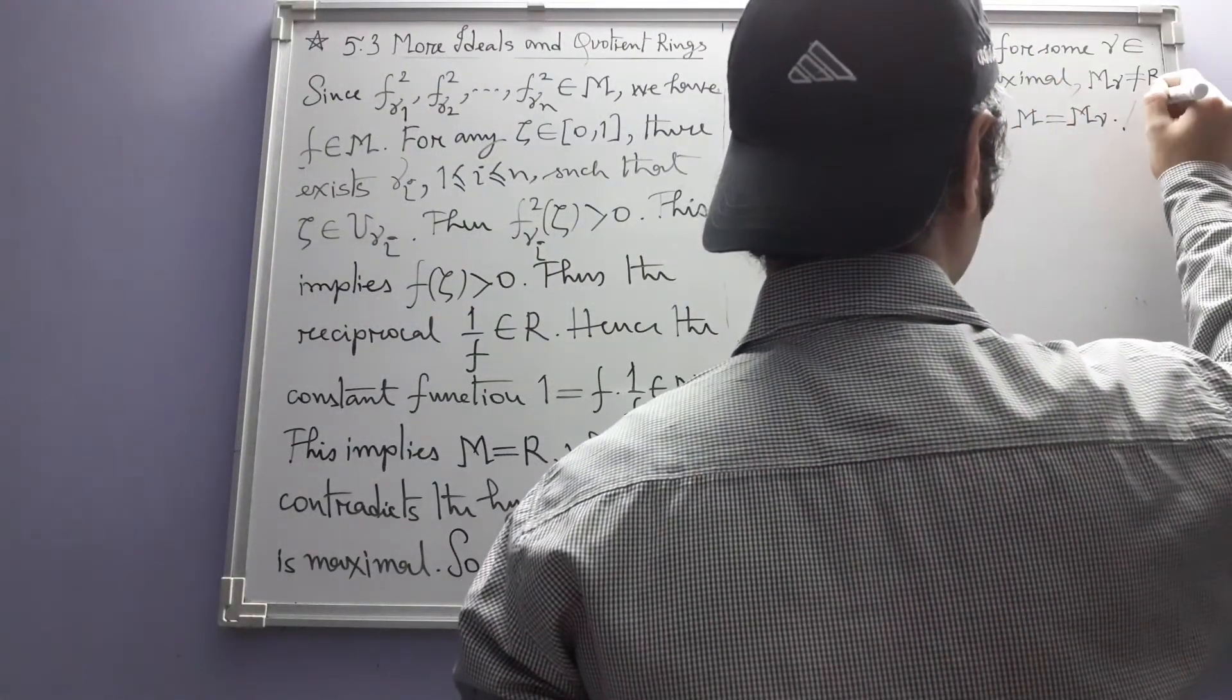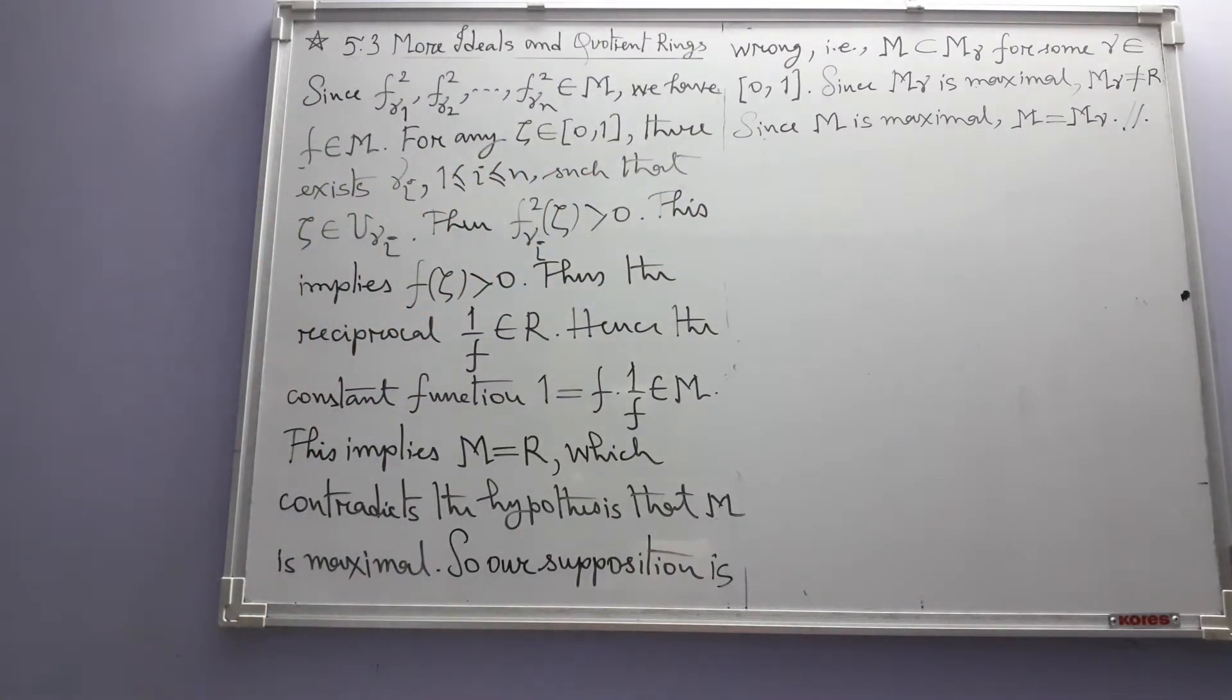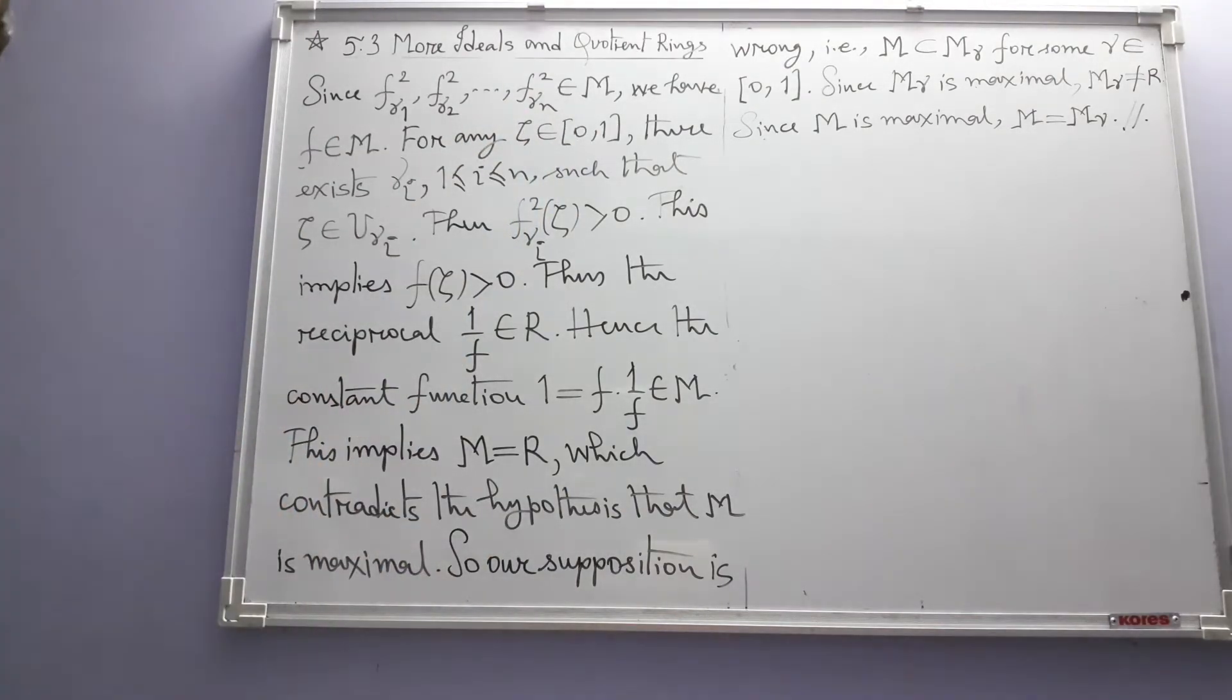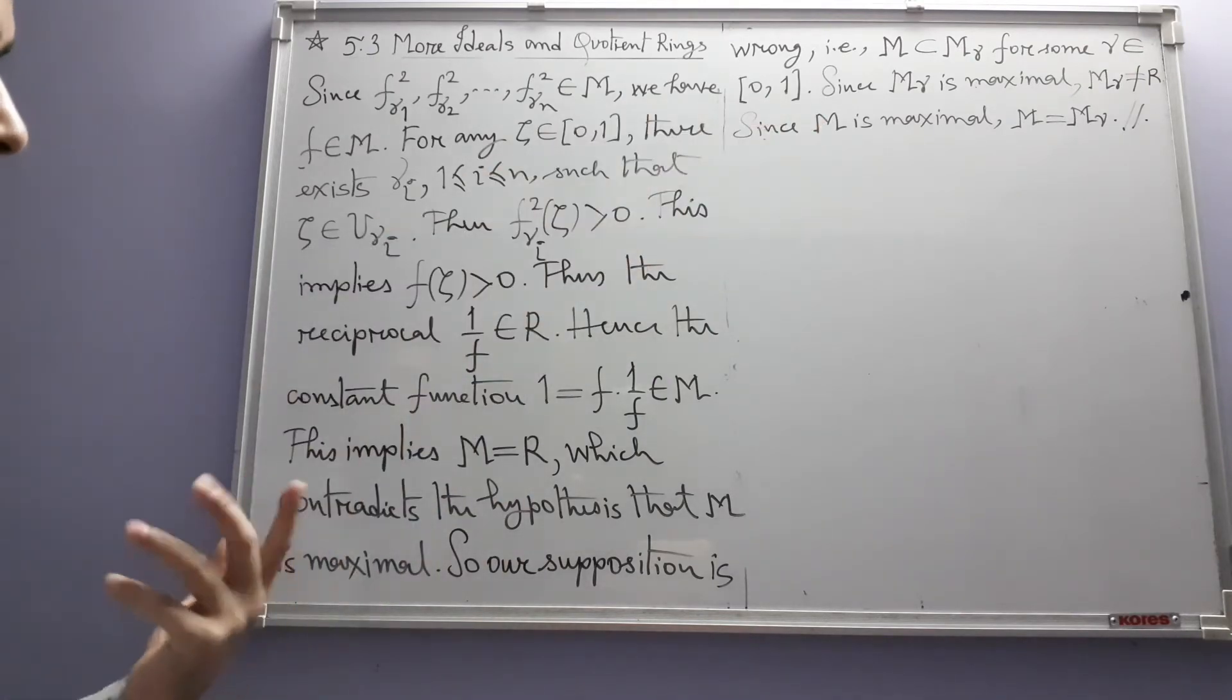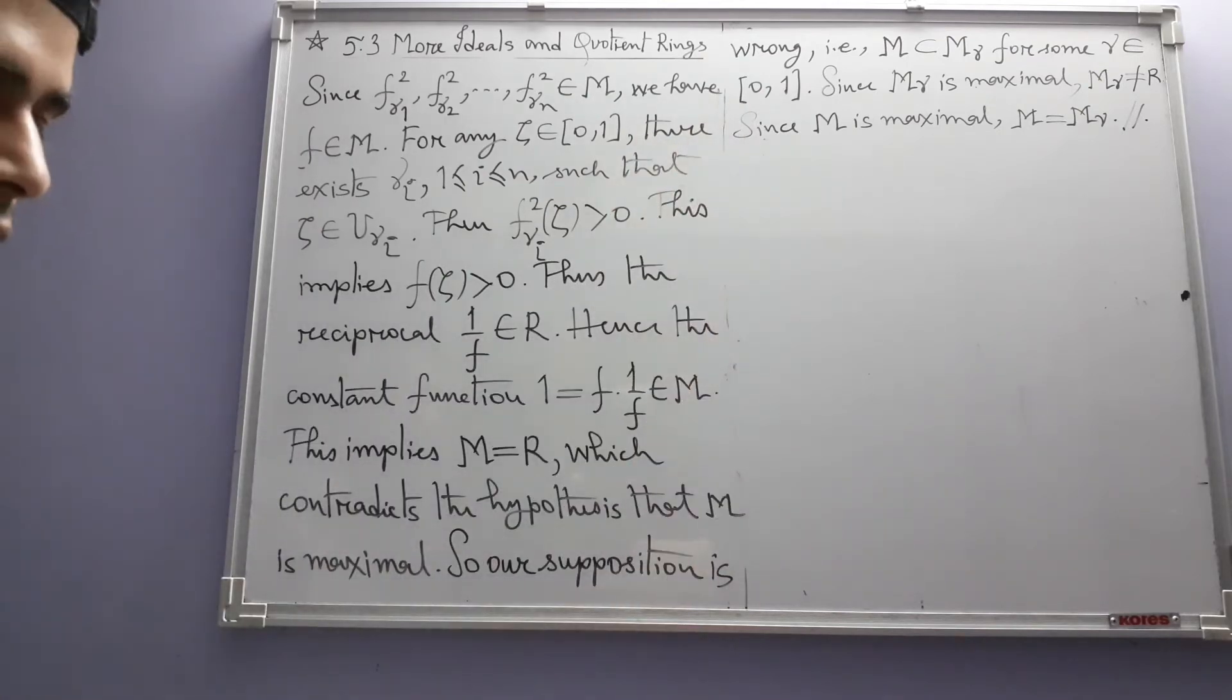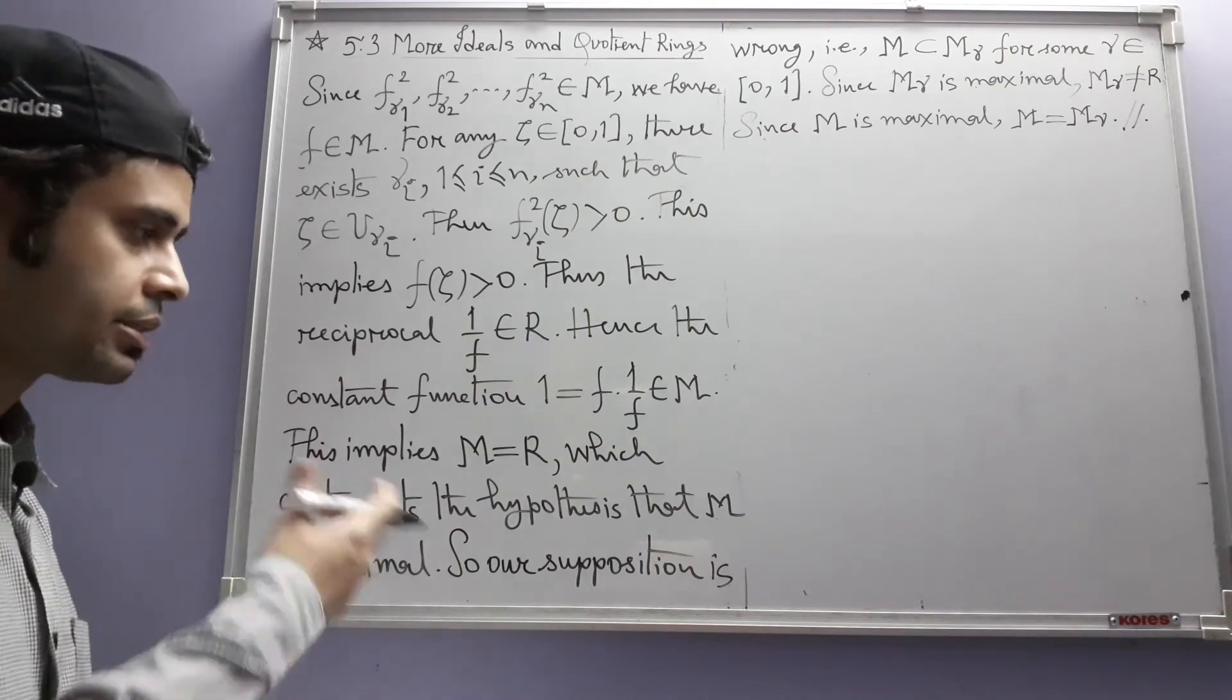So this ends the solution. So now the maximal ideals in the ring of all continuous functions, this ring, we have found them totally. And they are precisely the m_gammas. For each point in the closed unit interval, there is a maximal ideal. So with this, this set of exercises ends.